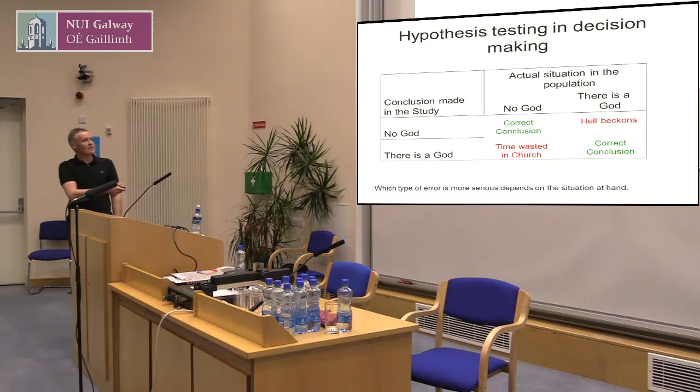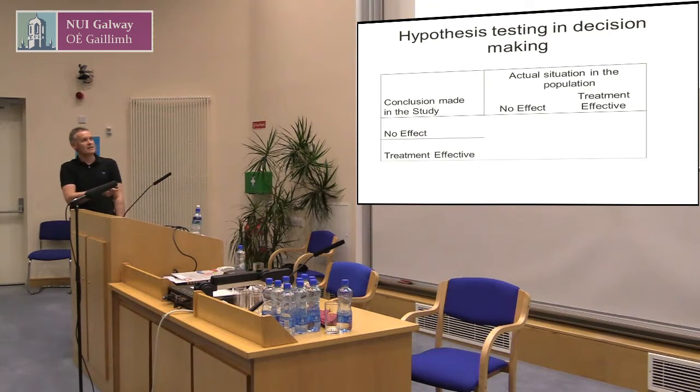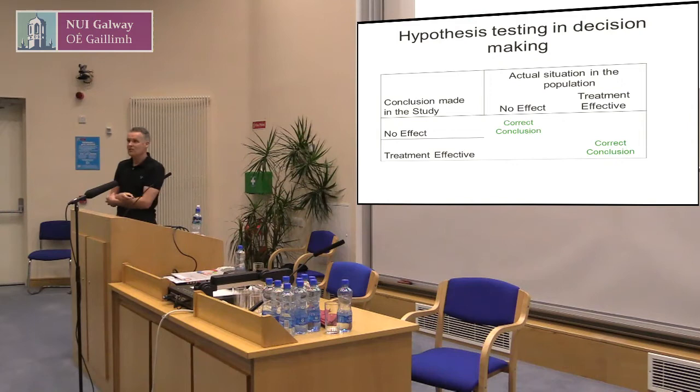The problem here is there are two different errors you're going to make, and the seriousness of the error depends on the situation at hand. So think about it — what happens when we run a trial. This could be a classical trial where we're looking at the effect of a treatment. The treatment either works or it doesn't, and you're going to make a decision based on the study. The treatment was effective but we missed it. Or: the treatment wasn't effective but we claimed it was.